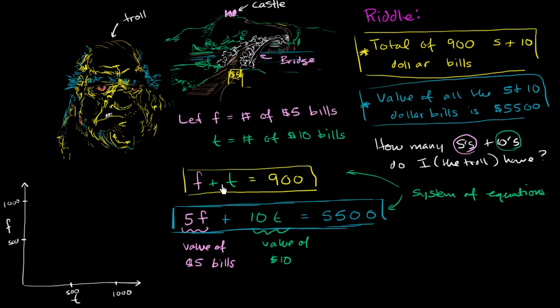So let's think about all the combinations of f's and t's that satisfy this first equation. If we have no tens, then we're going to have 900 fives. So that looks like it's right about there - that's the point 0 tens, 900 fives. But what if it went the other way? If we have no fives, we're going to have 900 tens.